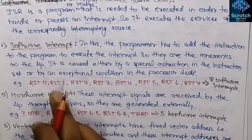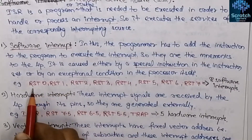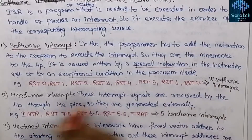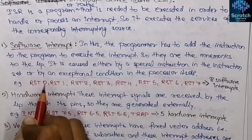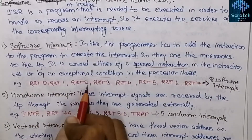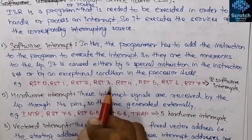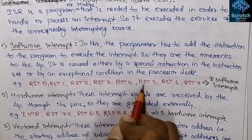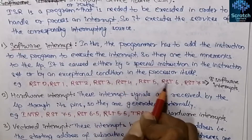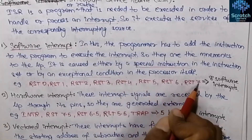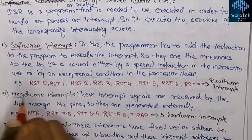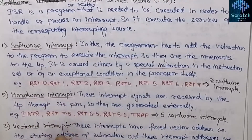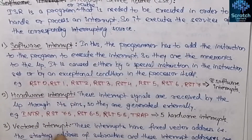There are eight software interrupts in the 8085: RST 0, RST 1, RST 2, RST 3, RST 4, RST 5, RST 6, and RST 7.